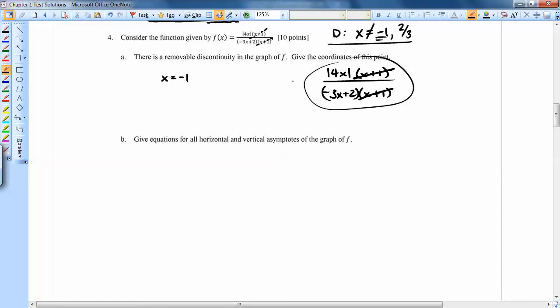So if you plug into this modified function, you can figure out where that hole is located. So I'm going to plug in negative 1 into this function. So I'm going to get 4 times negative 1 divided by negative 3 times negative 1 plus 2. And that's going to come out to absolute value of negative 4, which is 4, over 3 plus 2, which is 5.